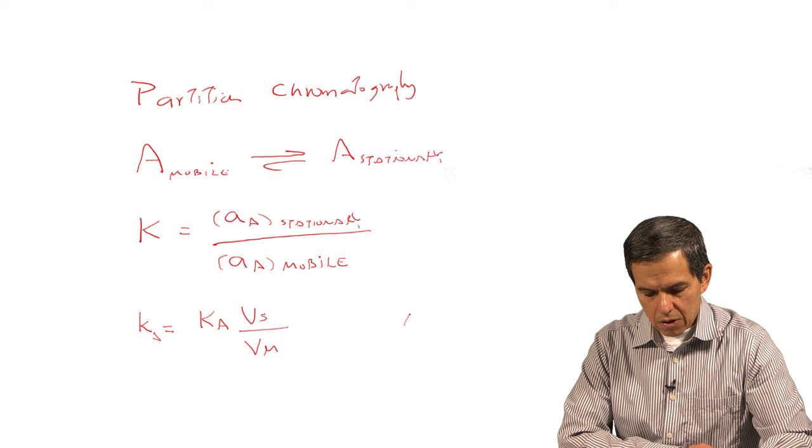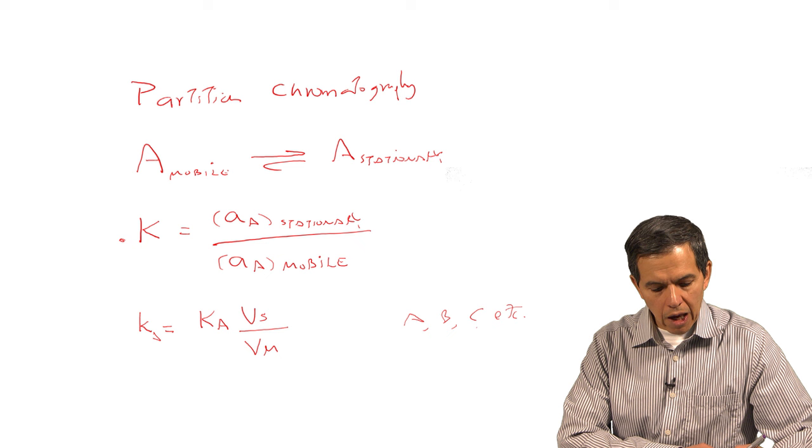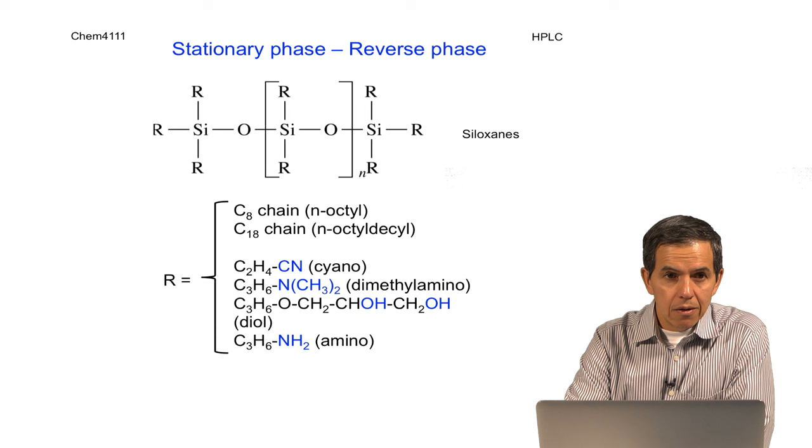Each compound—A, B, C, etc.—present in the sample will have a unique distribution constant and a unique retention factor.